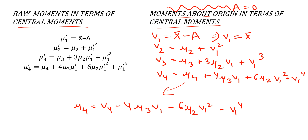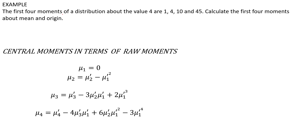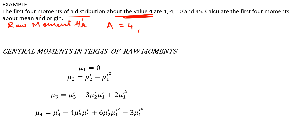Now we will skip directly to the example. The first four moments of a distribution are about the value of 4 — meaning these are raw moments with a = 4. The given values are: μ'1 = 1, μ'2 = 4, μ'3 = 10, and μ'4 = 45. We need to calculate the first four moments about the mean and about the origin.